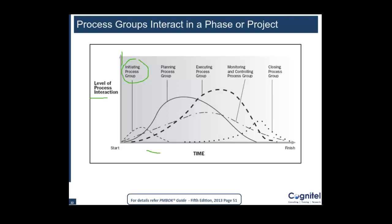Once you move ahead, you can see that planning interaction increases to the maximum, and at the same time monitoring and controlling is also rising slowly and steadily. Once you are in the middle of planning, you would have also started some execution, so execution is also increasing. Now once you move on further, execution becomes the most interactive process group and planning starts coming down, while monitoring and controlling remains throughout — this line goes till the very end of the project.